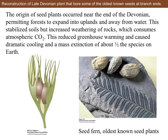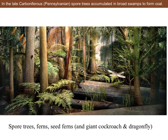You can see actual fossilized seeds from the seed ferns, the oldest known seed plants. Once these plants started to dominate the land, they consumed a lot of atmospheric carbon dioxide, greenhouse warming slowed, things cooled, and many species on Earth died in mass extinctions. In this picture we can see tree ferns, spore-bearing trees, seed ferns, also a giant cockroach and a dragonfly. This depicts the late Carboniferous — the Pennsylvanian era — when spore-bearing trees grew abundantly in swampy areas, died, and their bodies were compressed over millions of years to form coal and other fossil fuels.